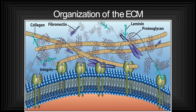It often plays a regulatory role in determining the shape and activities of the cell. In this slide, you can see a well-labeled diagram of the organization of the ECM. Here in this ECM you can see collagen, fibronectin, laminin, proteoglycan, and integrin — previously referred to as intrinsic and extrinsic proteins present in the plasma membrane.